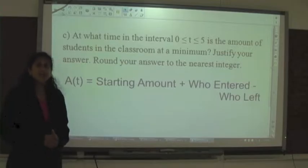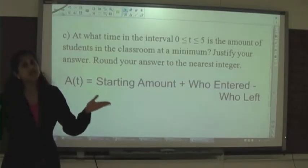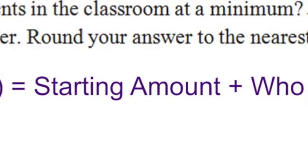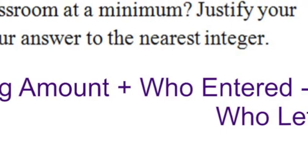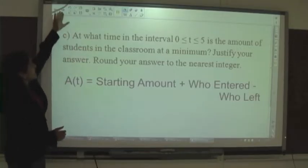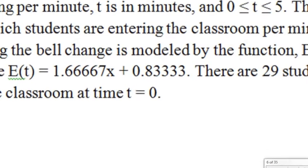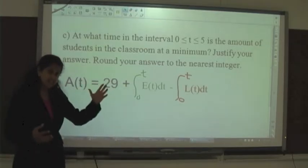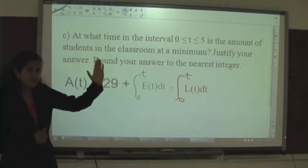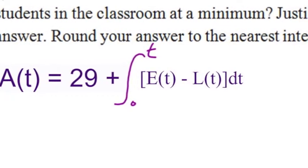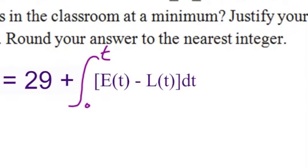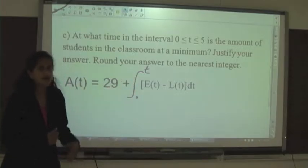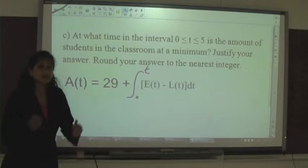I always ask students to create a verbal model. It asks: what is the amount of students in the classroom? We need the starting point, who entered in that time period, and who left. I'll call that equation A of T. The starting amount was 29 — that's how many people are in my third period class. The amount of people who entered is the anti-derivative of E of T, and the amount who left is the anti-derivative of L of T.